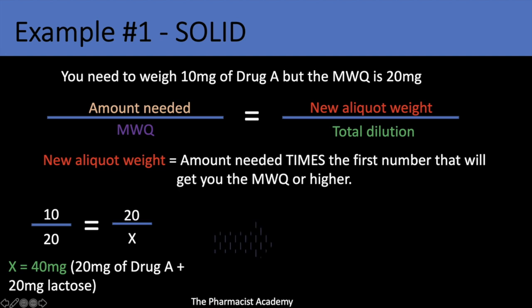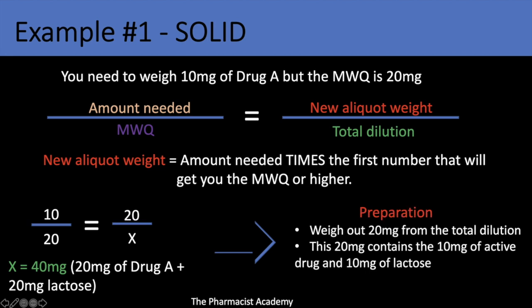When preparing this, weigh out 20 milligrams from the total dilution you just made. Weigh out the minimum weighable quantity — this 20 milligrams will contain 10 milligrams of active drug and 10 milligrams of lactose.